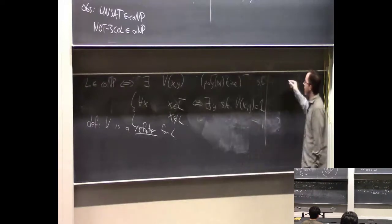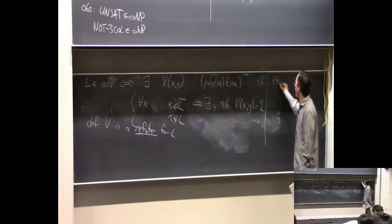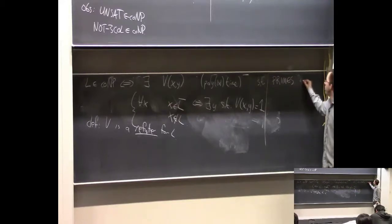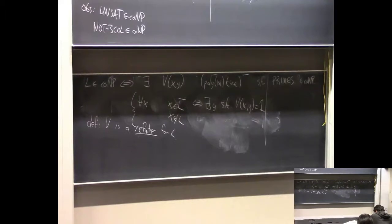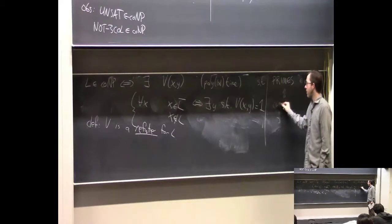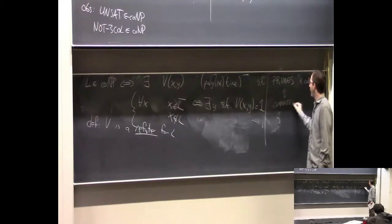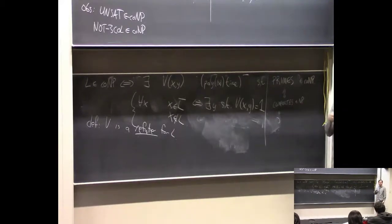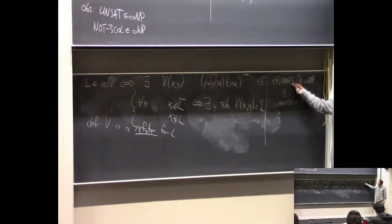This refuting way of thinking is useful for showing that Primes—the decision problem of whether a given number is prime—is in co-NP. One way to think about it: Primes is in co-NP iff the complement of Primes, which is basically Composites—is a given number composite?—is in NP. The composites problem is in NP because the verifier can expect to get a non-trivial factor of the number, and it can check that it really is a factor. So you can easily convince somebody in polynomial time that a number is composite.